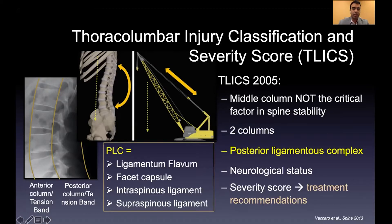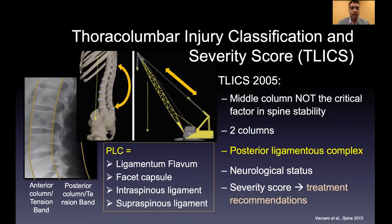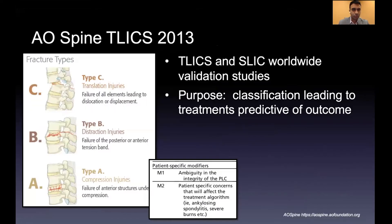The neurologic exam is also factored in — whether the patient is neurologically intact, has an incomplete spinal cord injury, complete spinal cord injury, or cauda equina syndrome. Higher points on the scale indicate the patient will likely need surgical intervention; lower points suggest conservative management may be appropriate.